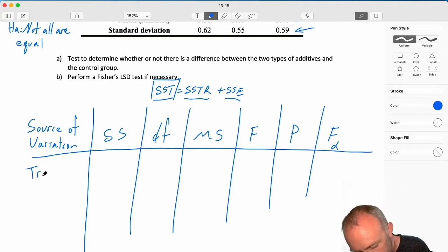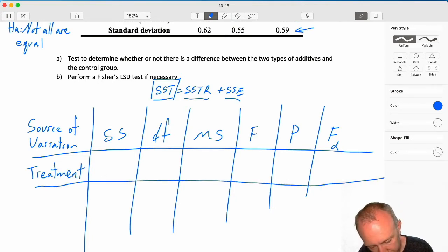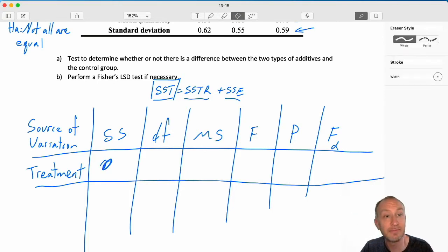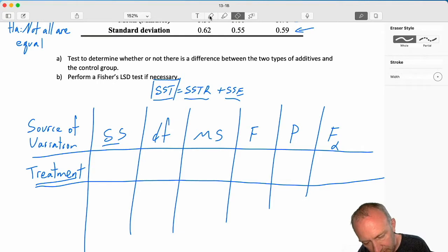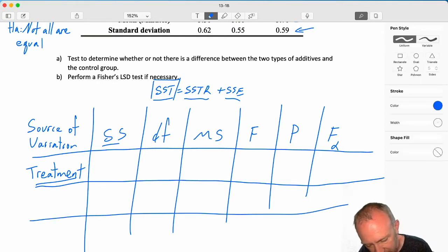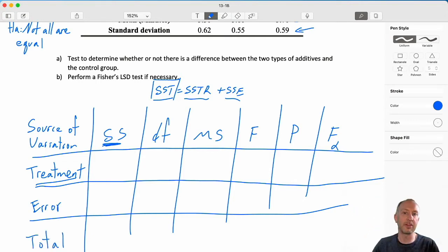The first one is always going to be that source of variation from treatments. So, this first square is SSTR - the sum of squares due to treatment. The next one here is going to be sum of squares due to error, and then we'll add those up and we'll get sum of squares total.